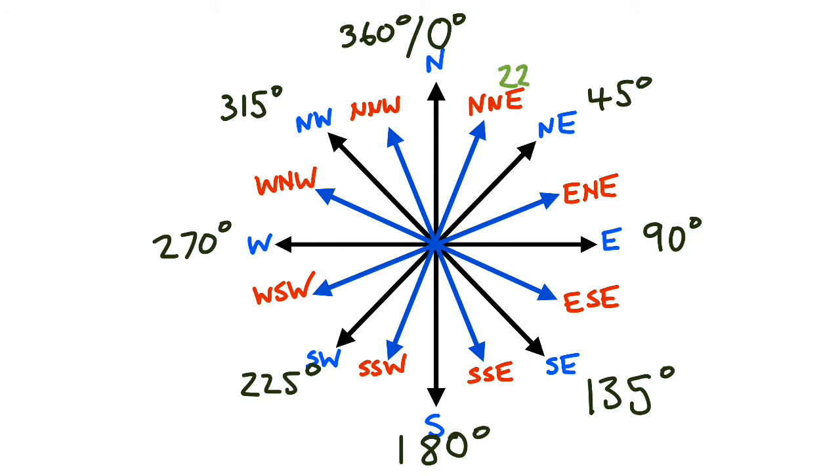And then as you can see here, the other degrees are being put in as well. So in between 0 and 45, halfway between is 22.5. In between 45 and 90, halfway between is 67.5.